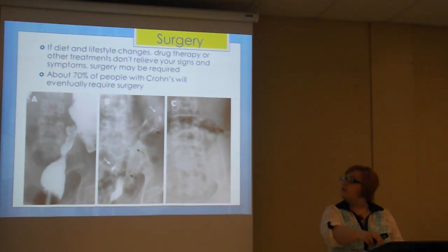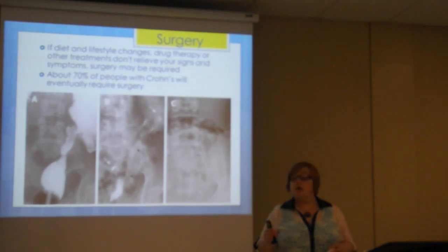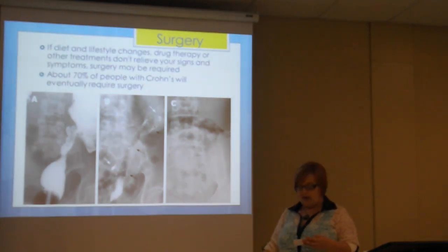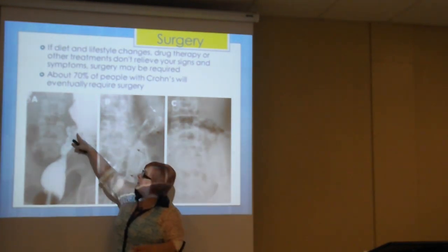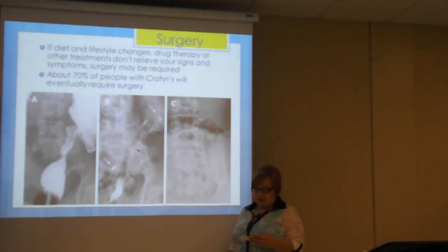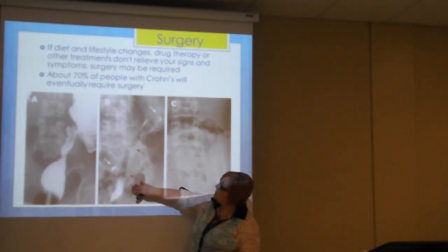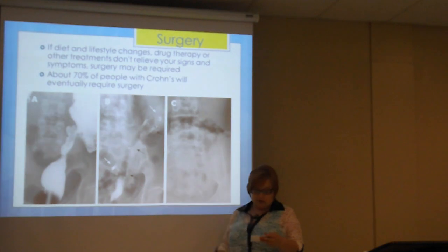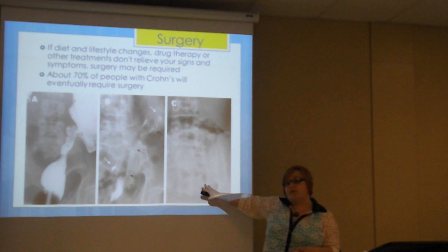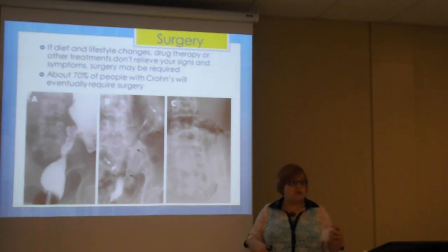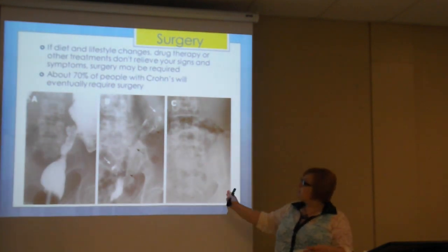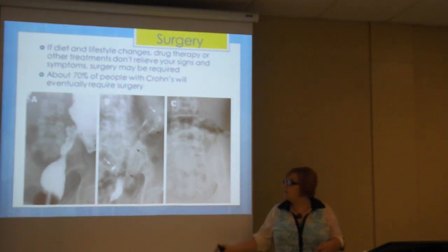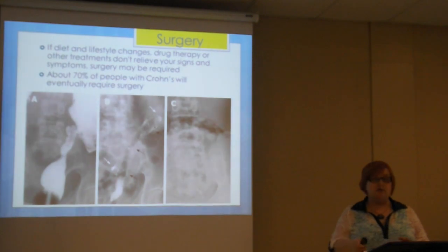If diet, stress relief, and other approaches don't work, surgery is the next step. About 70% of people with Crohn's disease will eventually require some type of surgery. In the image shown, there is a stricture in the sigmoid colon visible in image A with barium filling showing how narrow it is. A biodegradable stent was surgically implanted — image B shows it immediately after insertion with radiopaque dots visible — and four months later in image C the stent has dissolved, leaving the area more open and eliminating the stricture.